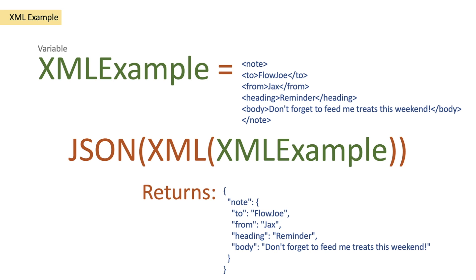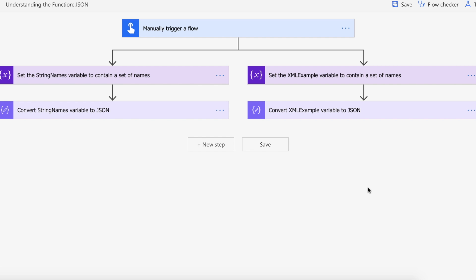That's how you can use variables to store your information, then pass that information into XML — converting our string — and then pass the XML into the JSON function, which then converts it to JSON. So we're transitioning from XML to JSON. Let's take a look at this on Power Automate.